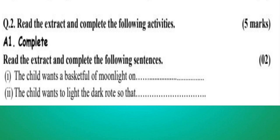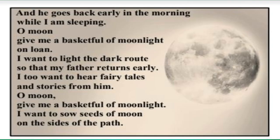Question number 2: read the extract and complete the following activities, for 5 marks. A1: Complete the following sentences. 1. The child wants a basket full of moonlight on... 2. The child wants to light the dark route so that... The extract: 'He goes back early in the morning while I am sleeping. O moon, give me a basket full of moonlight on loan. I want to light the dark route so that my father returns early. I too want to hear fairy tales and stories from him. O moon, give me a basket full of moonlight. I want to sow seeds of moon on the sides of the path.'